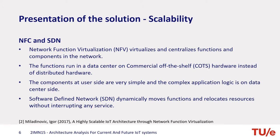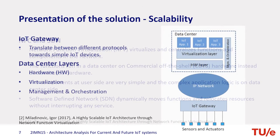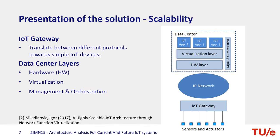Software-defined networking can also be applied. It dynamically moves functions and relocates resources without interrupting any services. The NFV architecture is shown in this picture. The IoT gateway runs on simple hardware and does not execute any application logic. The function of the IoT gateway is the translation between different protocols towards simple IoT devices. All application logic is located in a data center and runs on standard hardware shared among all applications for different network functions.